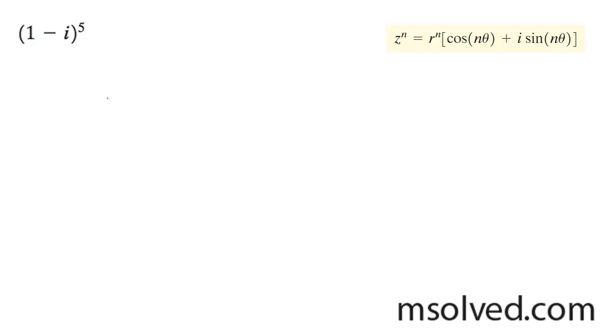So you want to find the standard a plus bi form of the quantity 1 minus i raised to the 5th. We're going to use the equation at the top right here.